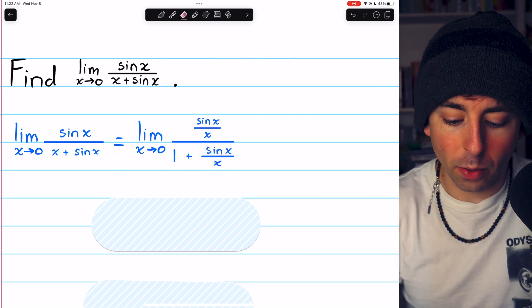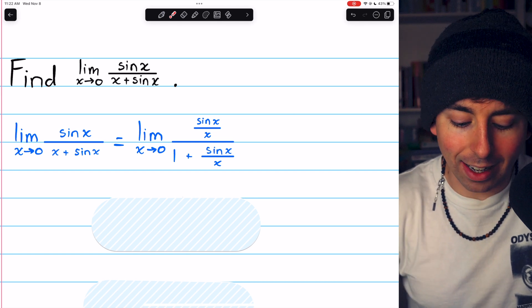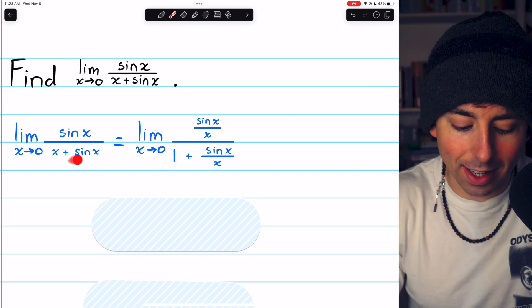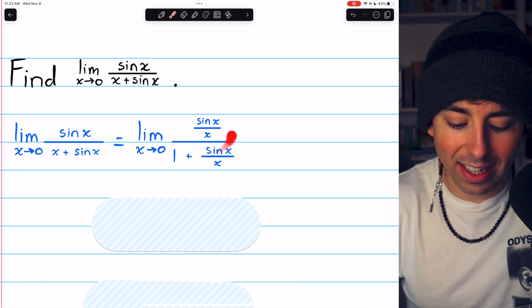So check this out. We divide everything by x. Sine x gets divided by x, x gets divided by x, and the sine x in the denominator gets divided by x, getting us here.